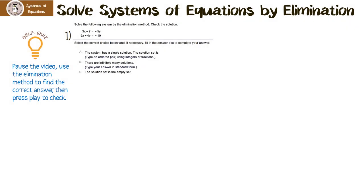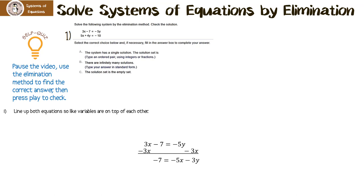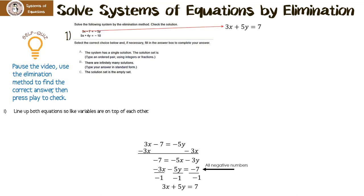Now it's your turn to try. Pause the video, use the elimination method to find the correct answer, then press play to check. The first thing we have to do is line up the x's and y's — they're not lined up yet, so we need to fix that. I subtract 3x from both sides, giving negative 7 equals negative 5x minus 3y. Flipping it around: negative 3x minus 5y equals negative 7. But these are all negative numbers, so I divide everything by negative 1, giving 3x plus 5y equals 7. Now when we rewrite them, x's are on top of x's and y's are on top of y's.